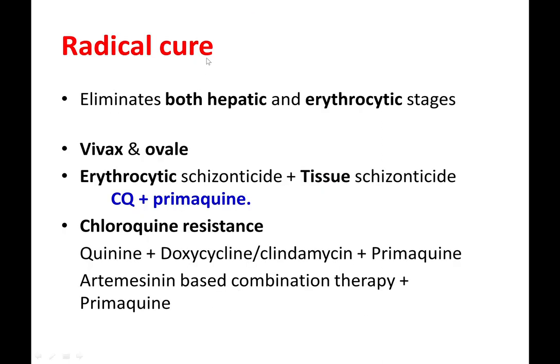For radical cure, both hepatic and erythrocytic stages are eliminated — that is for vivax and ovale — erythrocytic schizonticide is given along with tissue schizonticide, so chloroquine with primaquine. If chloroquine resistance is observed, quinine, doxycycline, or clindamycin are given with primaquine. A third approach is artemisinin-based combination therapy with primaquine.